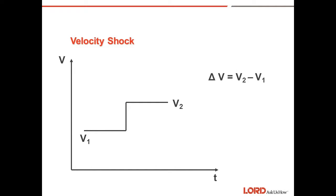The last type of shock you may encounter is velocity shock. Velocity shock occurs when an object moving at V1 instantly stops, or an object moving at a certain velocity V1 accelerates to a higher velocity V2. Again, the difference between the two velocities is the delta V that we can use.